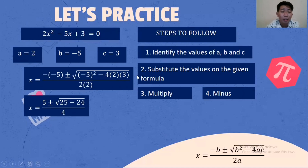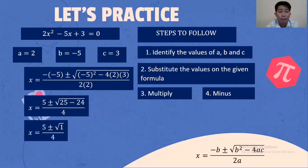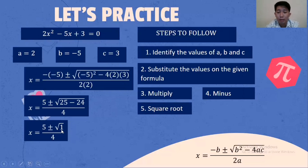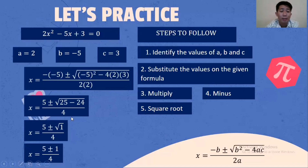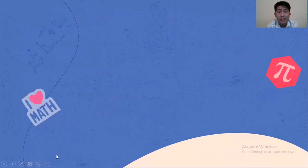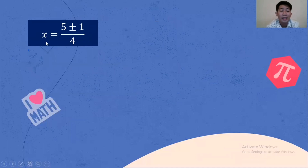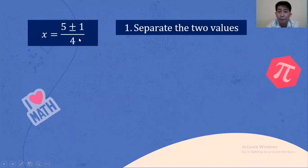Next, subtract: 25 minus 24, that is 1. Then find the square root. What is the square root of 1? That is 1. So we move on to the next process. X equals 5 plus or minus 1 over 4.